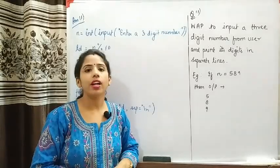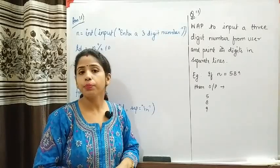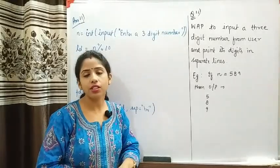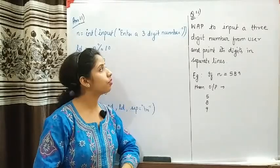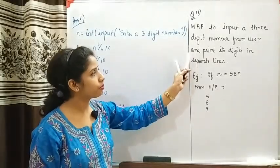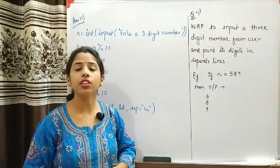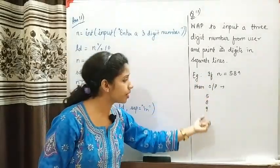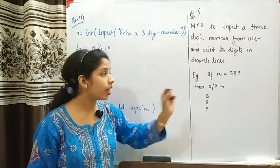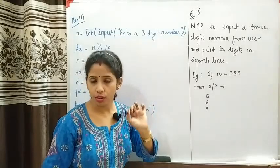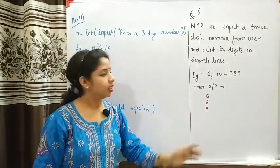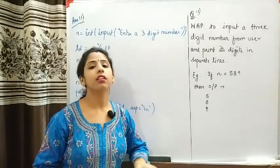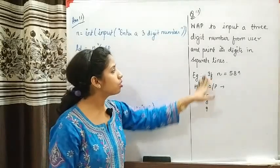Welcome students. In the last video I covered some basic Python programs, and now I'm going to take up the next few programs which will be a little bit tricky. The first question is: write a program to input a three-digit number from the user and print its digits on separate lines. For example, 589 — you have to print the digits of this number on separate lines by applying logic and operators.